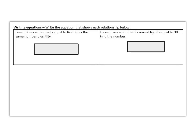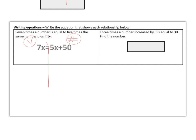When writing equations, you've got to read through for the key words. 7 times a number is equal to 5 times the same number plus 50. So here is what that would look like. And then if you wanted to go ahead and solve it, remember you want to move variables to one side and numbers to the other. So I would move 5x and subtract, giving me 2x equals 50. And then I would divide by 2, giving me x equals 25 for the first problem.